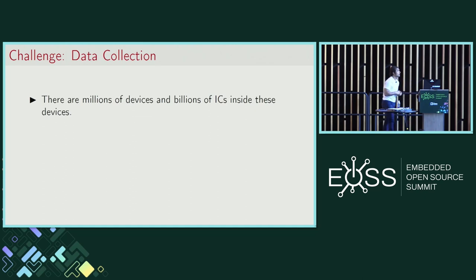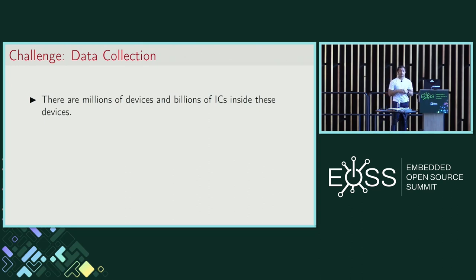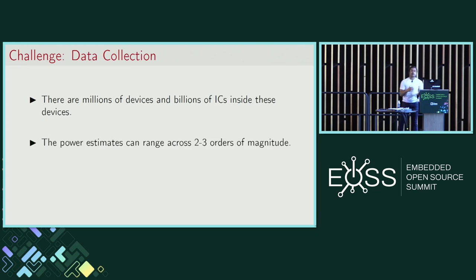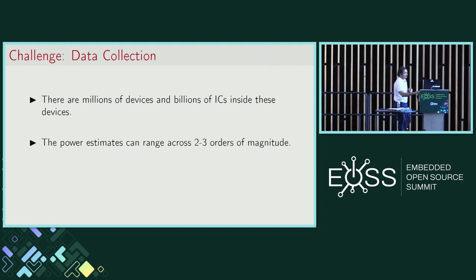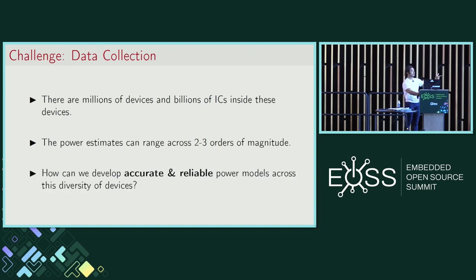Another challenge: data collection. The Linux ecosystem is extremely diverse, especially for embedded platforms — millions of devices, thousands of vendors, billions of ICs. Very often, even data sheets are not available for some devices. The power estimates can range across two to three orders of magnitude. For example, an edge device may run within a budget of a few milliwatts, while a server-class data center device could easily pull 1,000 watts. An error of one watt for a server would not matter much, but for a milliwatt device, one watt could fry it. Being mindful of the context is critical.